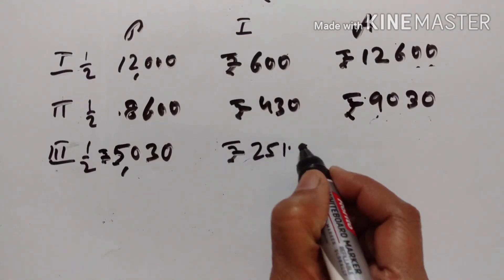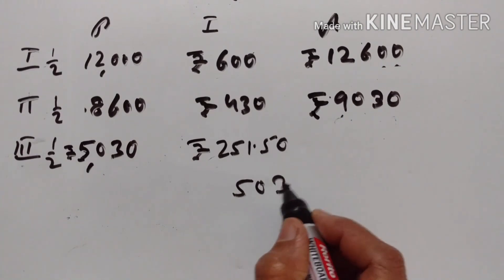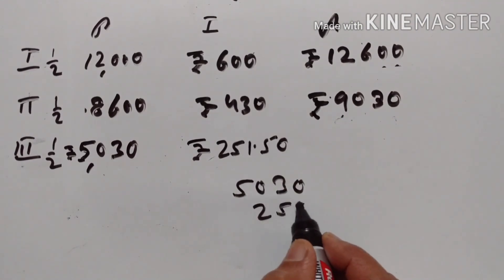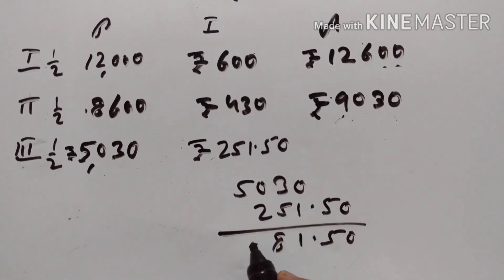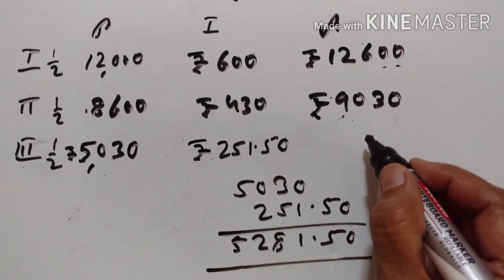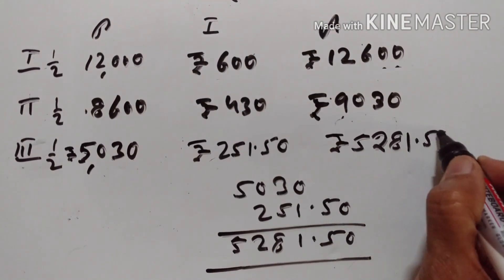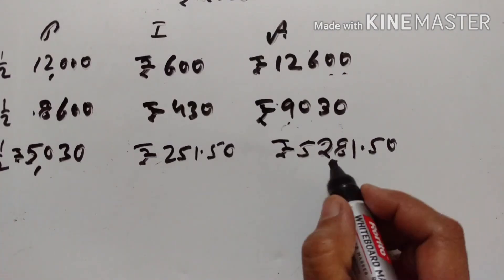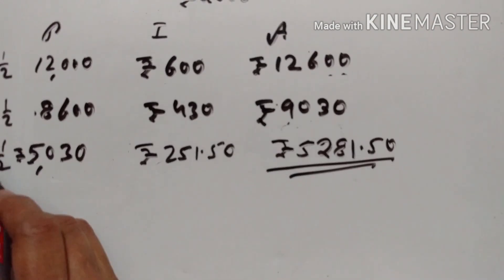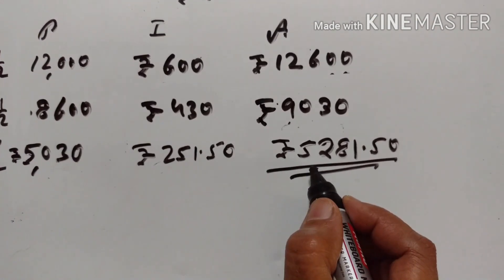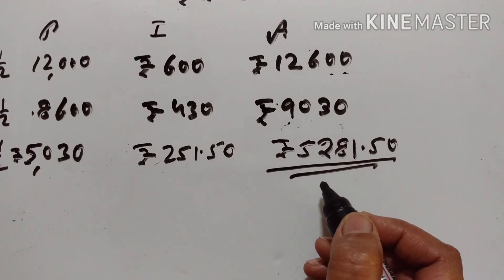Rs. 251.50. So Rs. 5,030 plus Rs. 251.50 equals Rs. 5,281.50. This is the third payment she has to make at the end of 18 months in order to clear the entire loan.